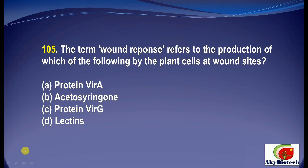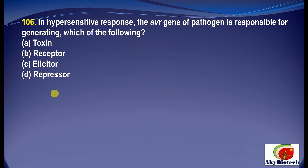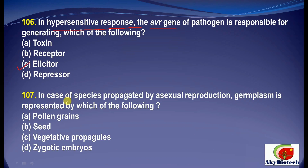Question 5: The term 'wound response' refers to the production of which of the following by plant cells at wound sites? The correct answer is acetosyringone. Question 6: In hypersensitive response, the avr gene of the pathogen is responsible for generating which of the following? The correct option is elicitor. Question 7: In case of species propagated by asexual reproduction, germplasm is represented by which of the following? The correct option is vegetative propagules.